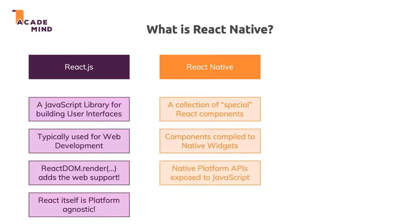Besides giving you these components, React Native is a bit more than that. It also gives you access to some native platform APIs — for example, it helps you use the device camera. These are common tasks you'd want to do in native apps. In general, React Native gives you tools to connect JavaScript code to native platform code, because you typically build a React Native app by mostly writing JavaScript code — or, depending on the app, entirely in JavaScript. You can also write native code for iOS or Android, and React Native gives you the tools to connect your JavaScript code to that native code, though that's more advanced and in many apps you'll never need it.